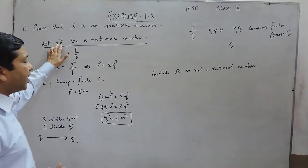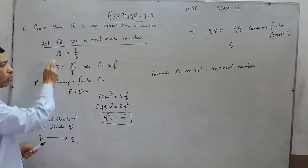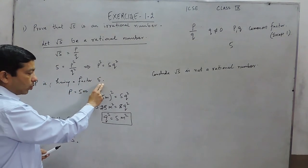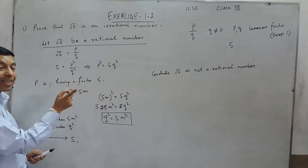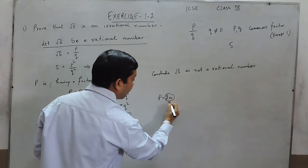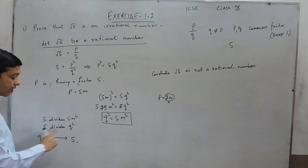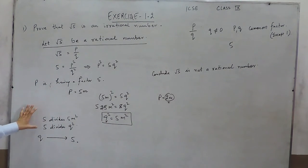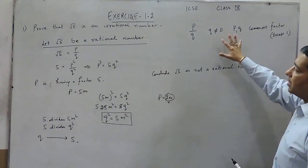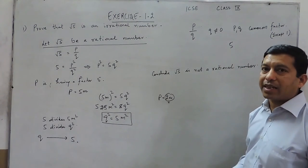In case instead of under root 5 it is under root 2, then also if we put under root 2 here, we will get 2 here and also 2 here. P is having a factor of 2. When we put the value of P as 2M, we have to substitute P as 2M, and Q² will come out to be 2M². It means Q² is also having a factor of 2. And when P and Q both are having a common factor other than 1, it means it is not a rational number, and when it is not a rational number, it means it is an irrational number.